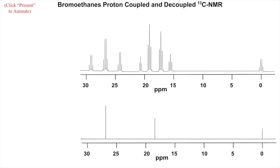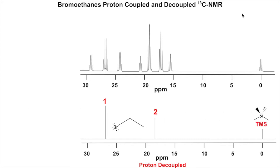Bromoethane's proton-coupled and decoupled carbon-13 NMR spectra. On top we have the proton-coupled spectrum and below the decoupled. In the proton-decoupled spectrum we have two signals: signal one is the carbon attached to the bromine, and signal two is the carbon further from the bromine. TMS is at zero as the internal standard.